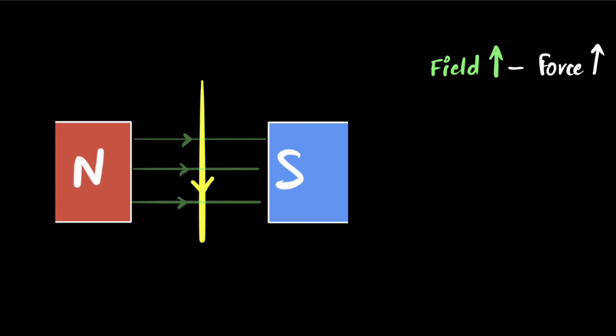But we also find that if you have more current, then again, force increases. And again, that kind of makes sense. If there was no current in the wire, there will be no force at all. If there's a little bit current, then there'll be a little bit of force. If there's more current, there'll be more force.